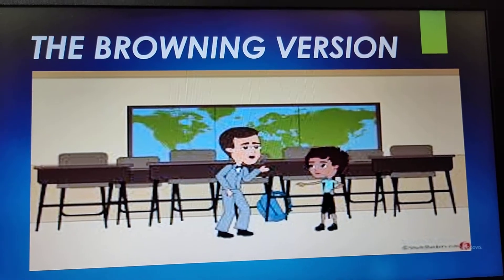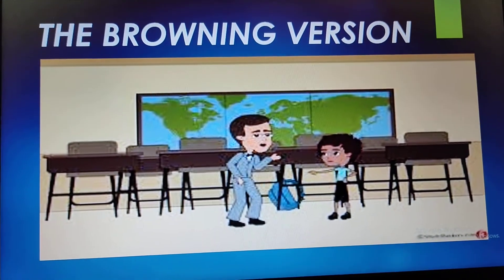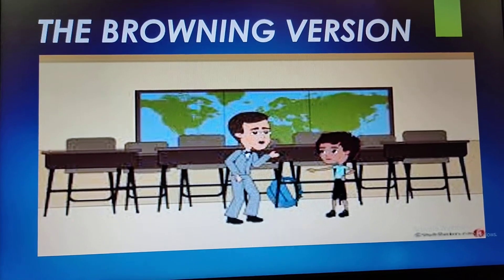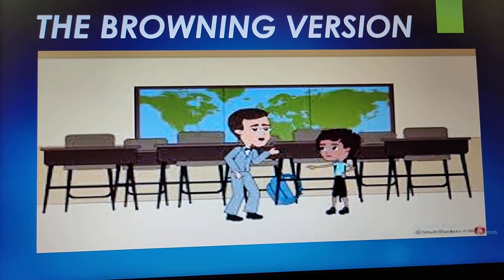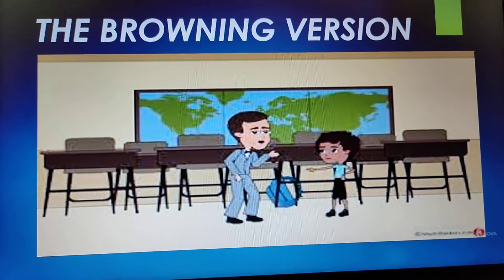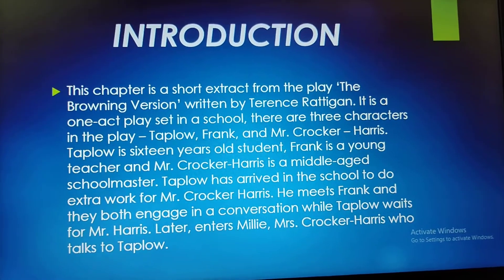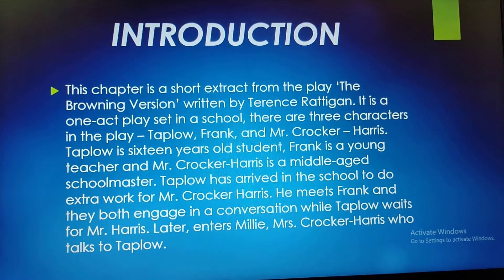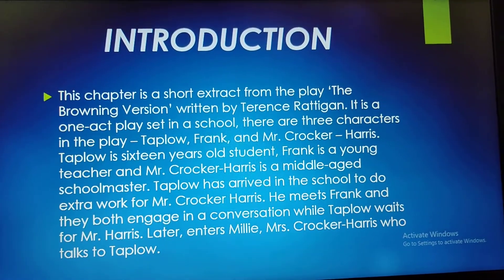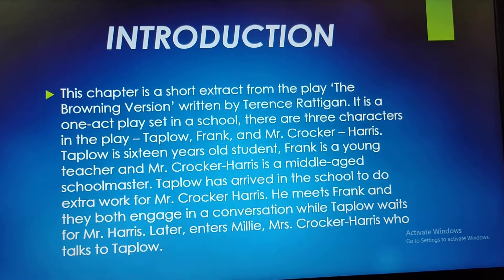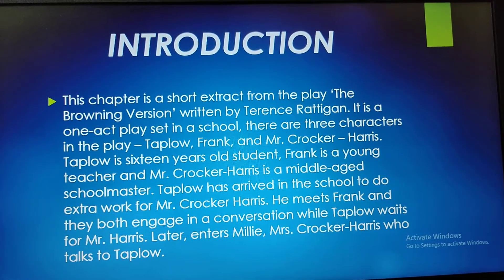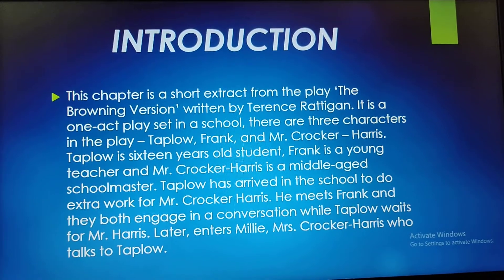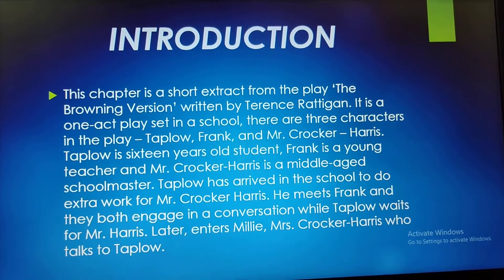Hello everyone, we will be studying about a new chapter today — The Browning Version. The Browning Version is an extract from the play of the same name written by Terence Rattigan. This chapter is a short extract from that play; it is a one-act play set in a school.